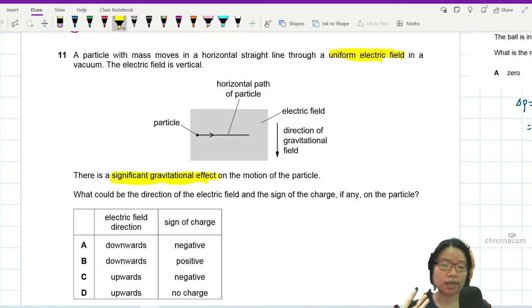So normally when we look at electric field, we sometimes ignore the weight of the particle because we are accelerating something like a proton or electron where the weight is negligible compared to the electric force. But in this case it is not, so just FYI they tell you already. What could be the direction of the electric field and the sign of the charge, if any, on the particle.